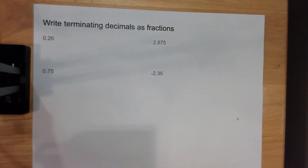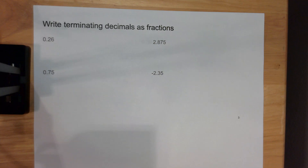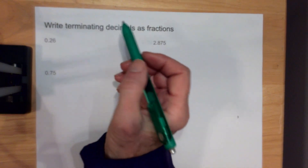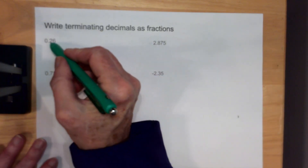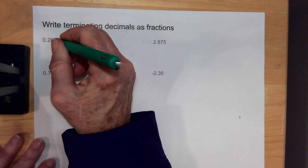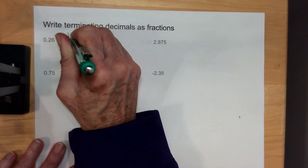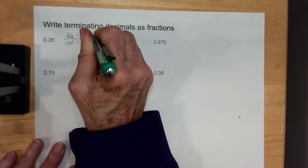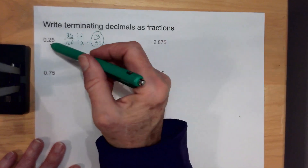I also have to be able to write terminating decimals as fractions. Terminating decimals are decimals that stop — you know the end of them. These are ones that have concrete endings. So when I have 0.26, that is the same as 26 over 100, because that 6 is in the hundredths location. I'm going to divide the top and the bottom by 2, and it's going to give me 13 over 50.